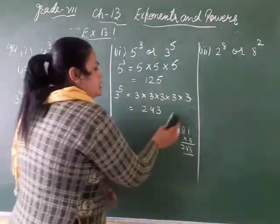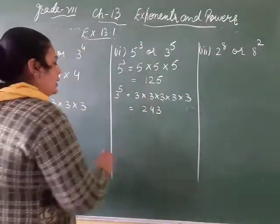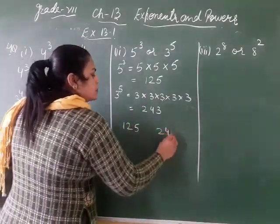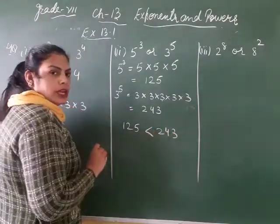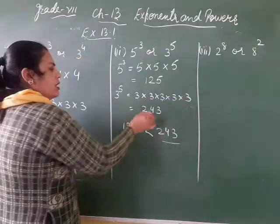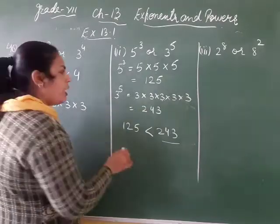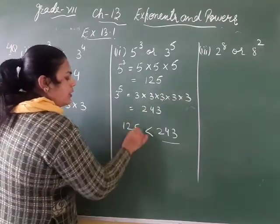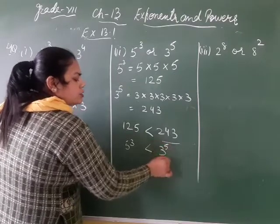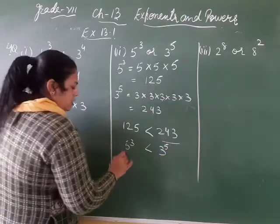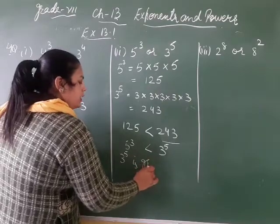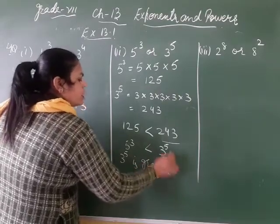So now which is greater — 243 or 125? 243. So 243 came from 3 raised to power 5. That means 5 cubed is 125 and 3 raised to power 5 is 243, so 3 raised to power 5 is greater.